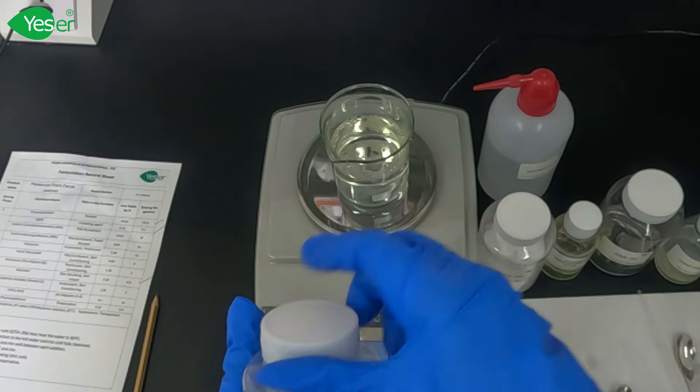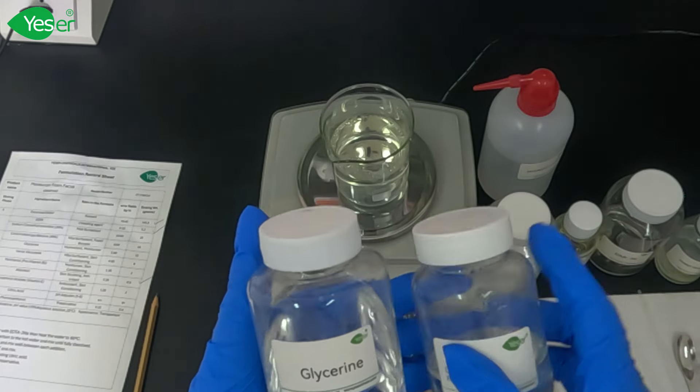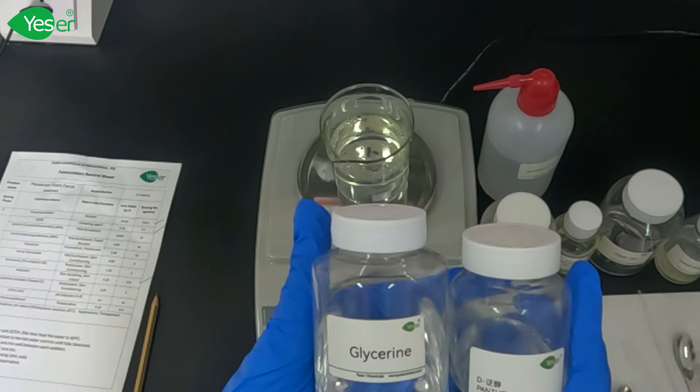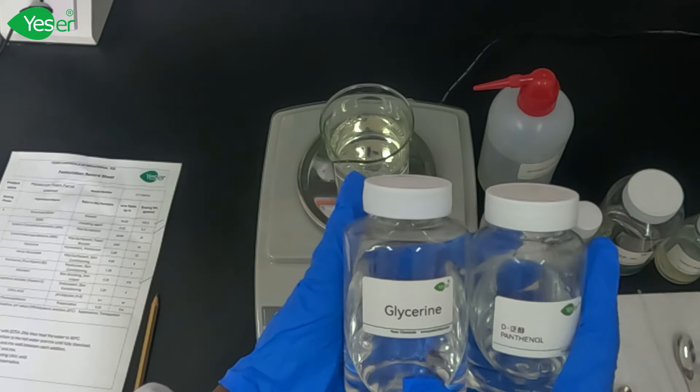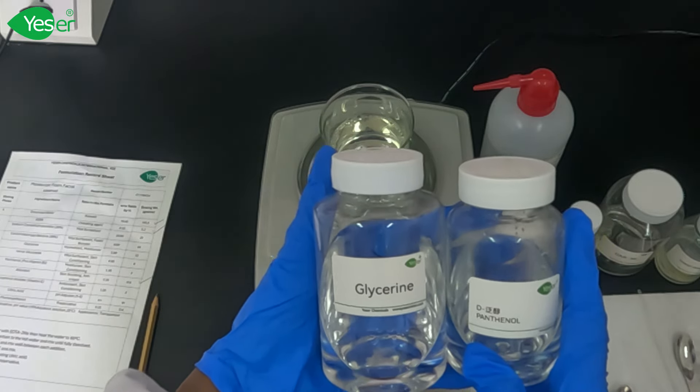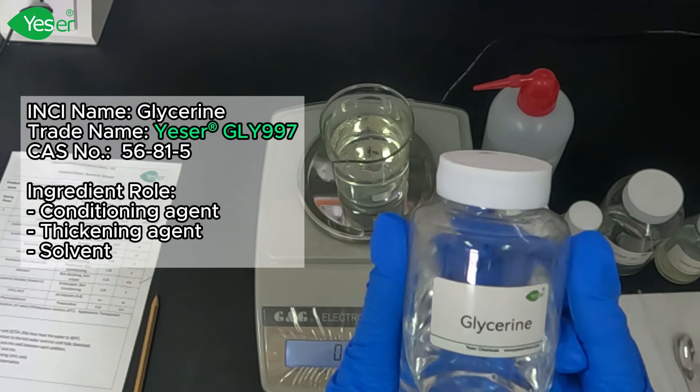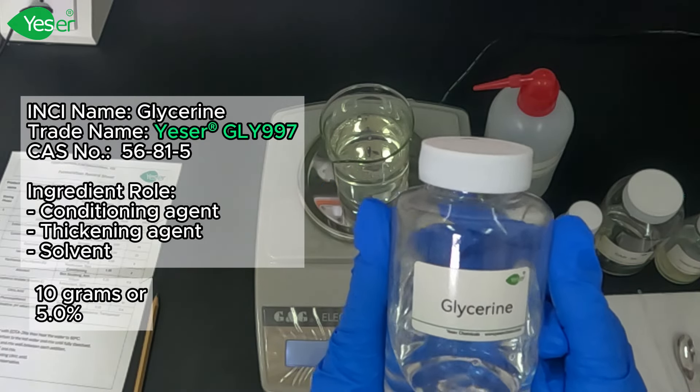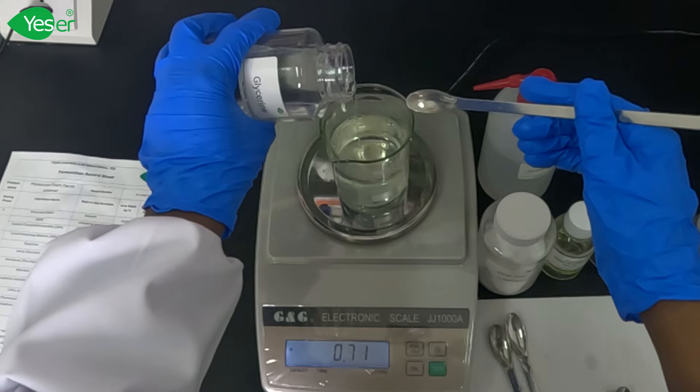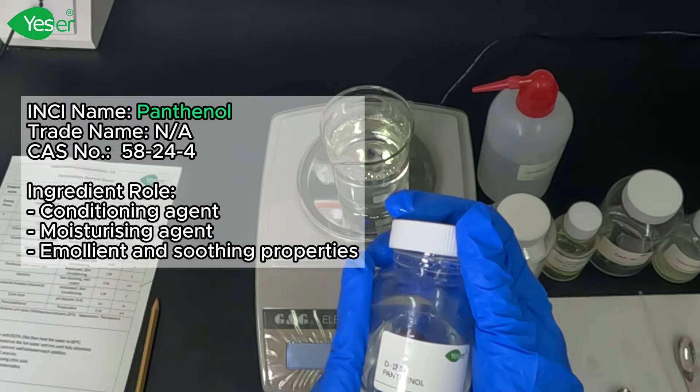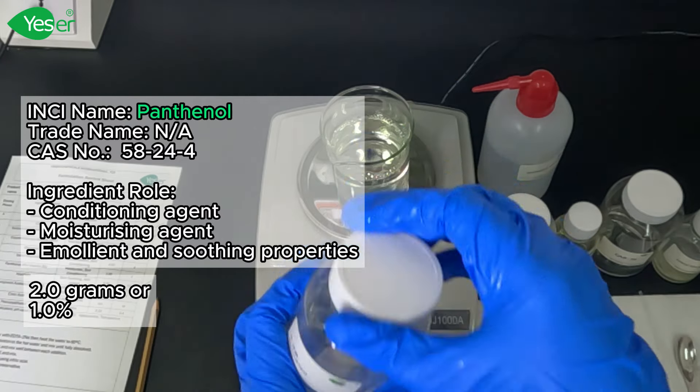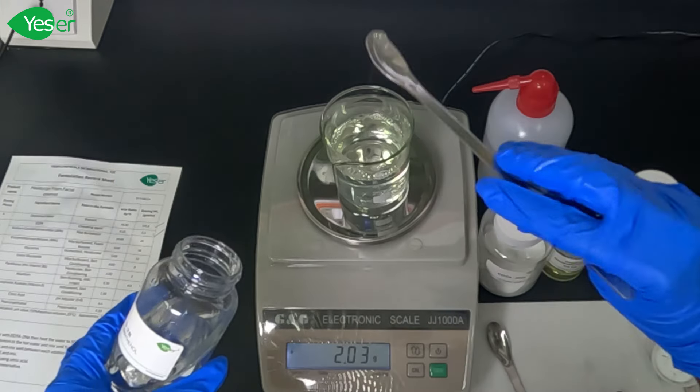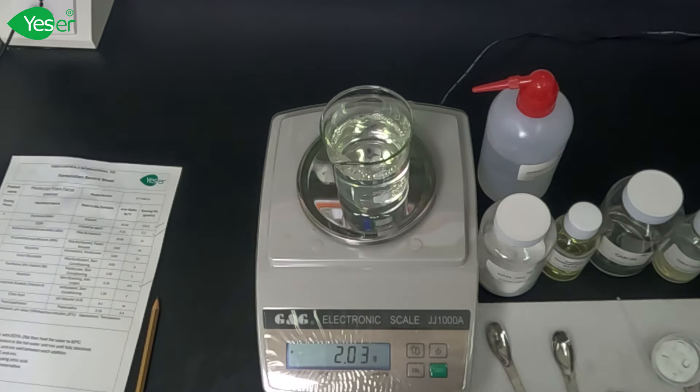After we finish adding our surfactants, we're going to go to the next step which is our moisturizers. At first, we used allantoin with hot water, and now we're going to add glycerin and panthenol as moisturizers. For glycerin in this formula, we're going to use 5%, which is equivalent to 10 grams. Today from panthenol, we're going to use 1%, which is 2 grams. Now we're going to mix our moisturizers until they fully dissolve and mix.